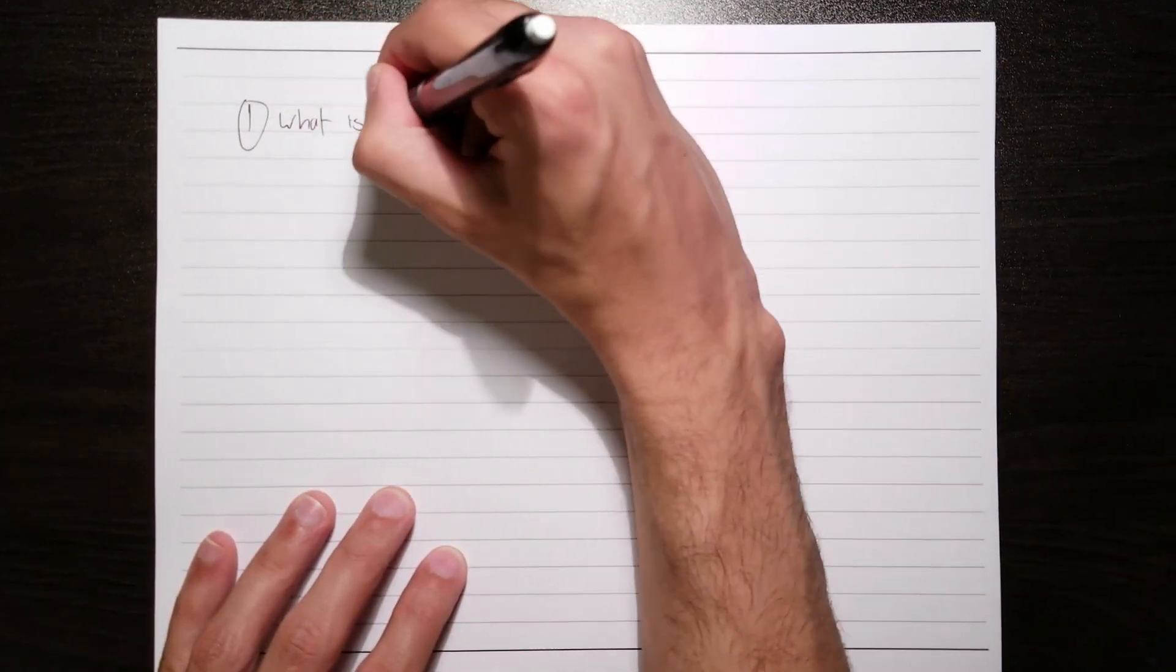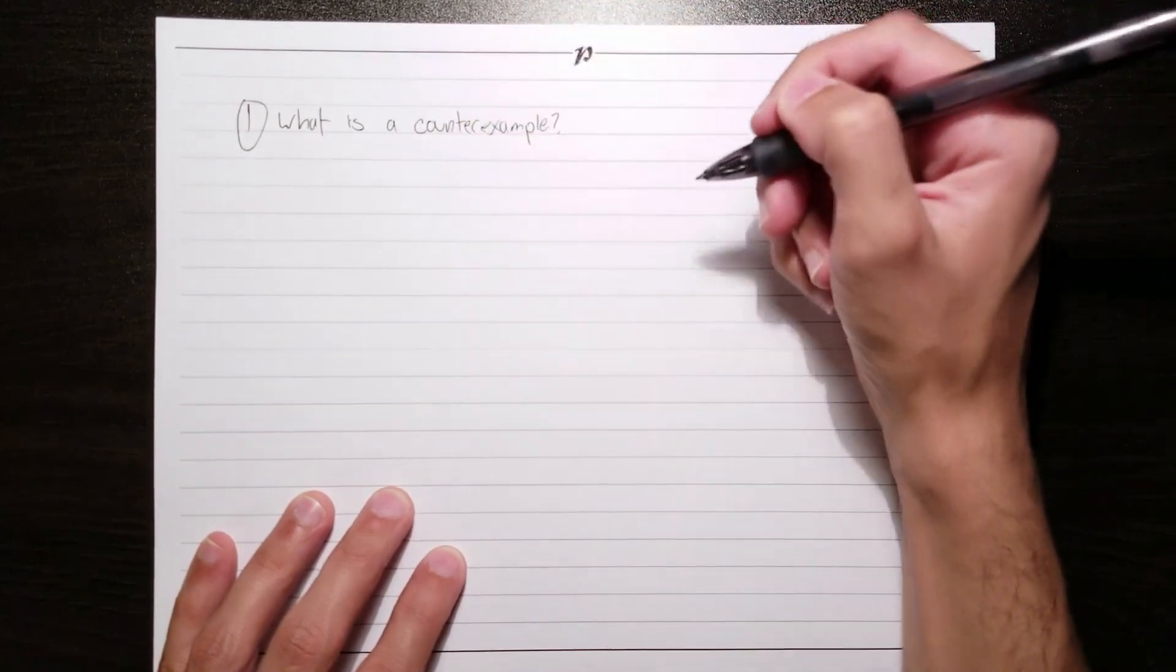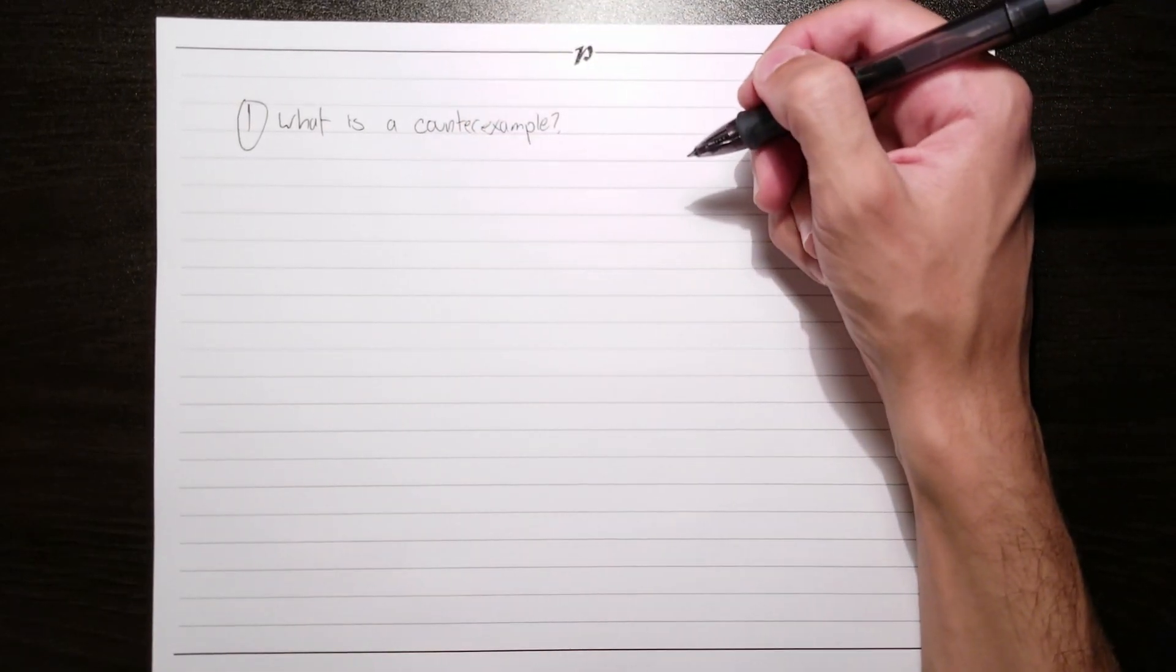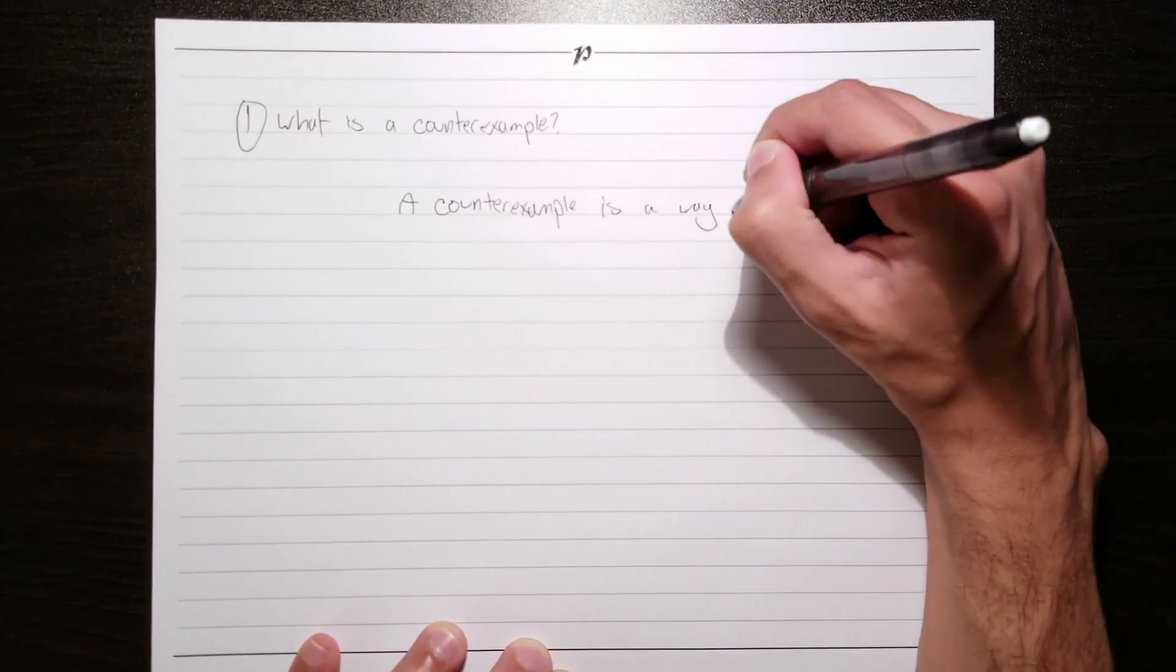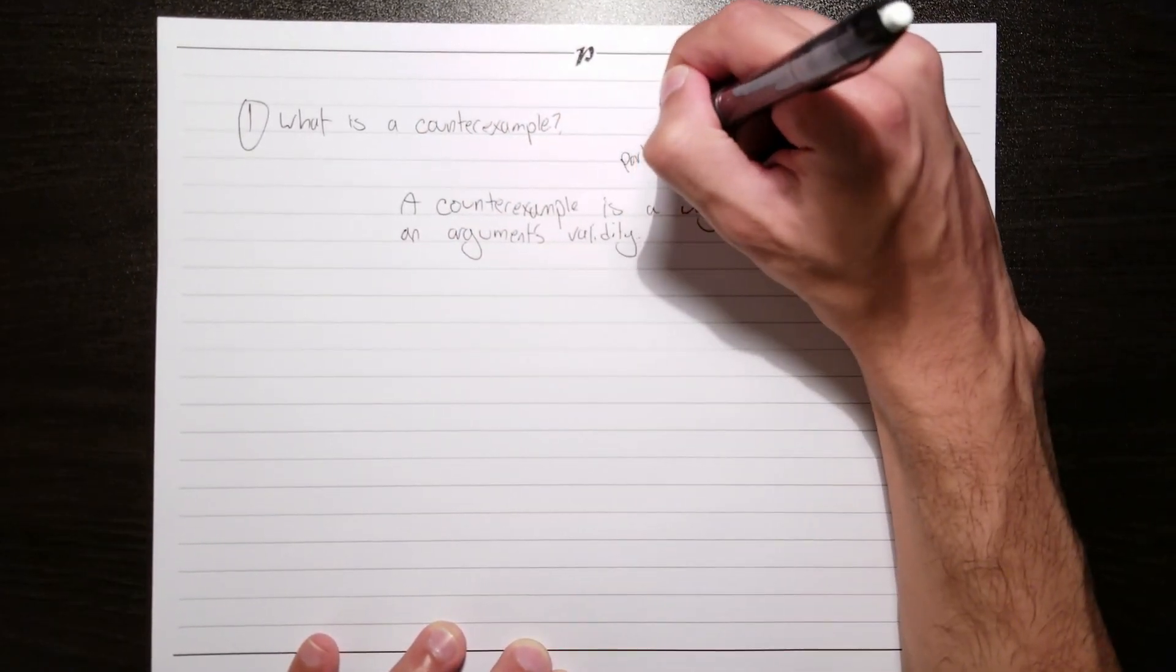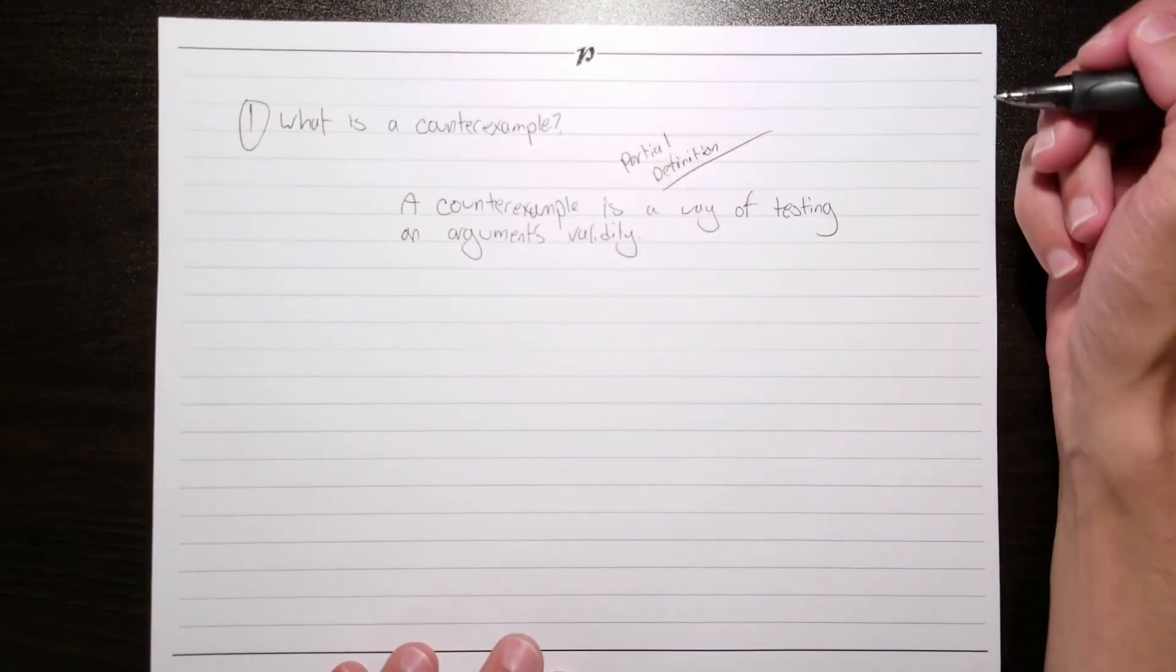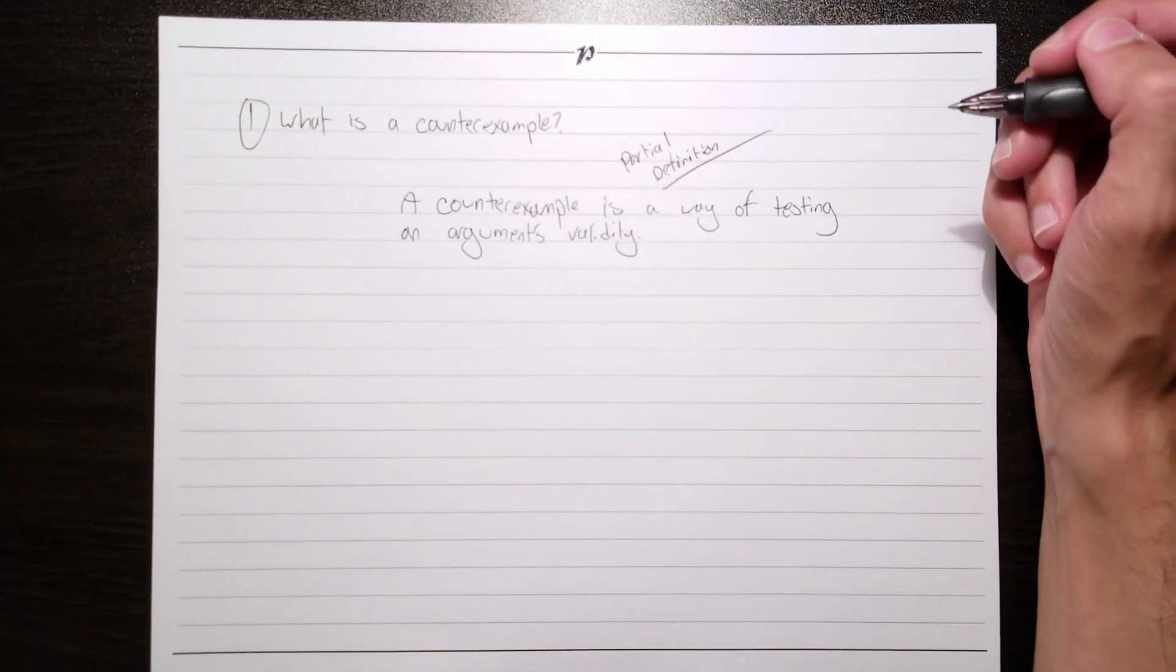Let's start with the first question, what is a counterexample? I promise I'll try to improve my handwriting over time. As just mentioned, a counterexample is a way of testing an argument's validity. This of course is just a partial definition. Let's try to get something that's a little more fleshed out.